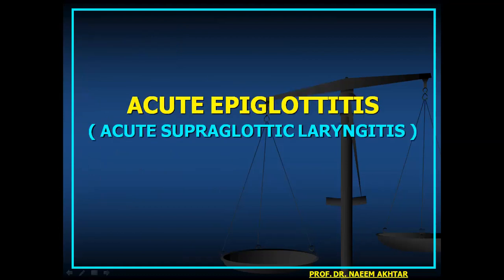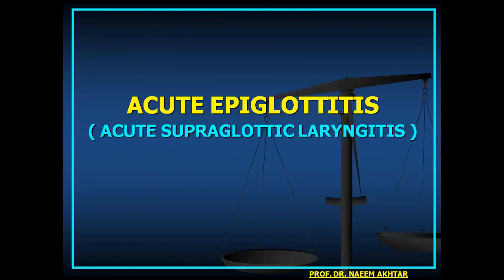Acute epiglottitis, also known as acute supraglottic laryngitis, is acute inflammation of the mucosa of the supraglottic structures — the epiglottis, aryepiglottic folds, and arytenoids. All these structures develop marked edema and congestion, which may obstruct the airways, making this a very serious condition.